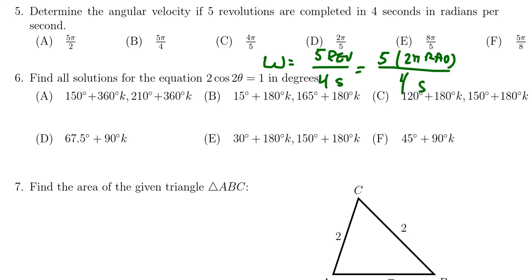So simplifying this a little bit, two goes into four, of course, two times, so we can cancel that. And so we end up with five pi over two, and this would be radians per second. So we see the correct answer would be choice A.